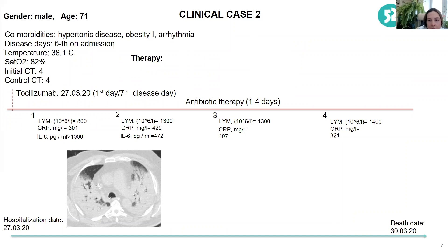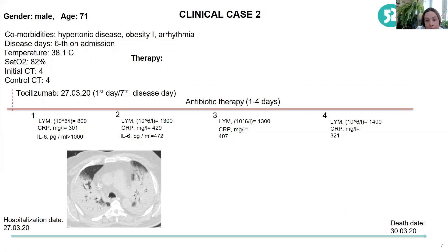The second case is less optimistic. Unfortunately, this patient died — also a male, 71 years old, with some comorbidities. He was admitted on day six of disease with temperature higher than 38°C and was admitted directly to the ICU. He was on artificial ventilation and we initiated tocilizumab on the first day. As you can see, there was huge lung involvement, but unfortunately we did not succeed. This perhaps supports our thinking that when the patient is already very severe, we are too late and cannot reverse the picture.